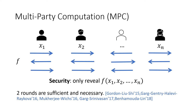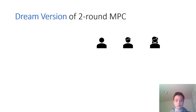Previously, there is a long line of works studying the round complexity of multi-party computation. It is known that two rounds are both sufficient and necessary for MPC. Then a natural question is: what's the dream version of a two-round MPC protocol?